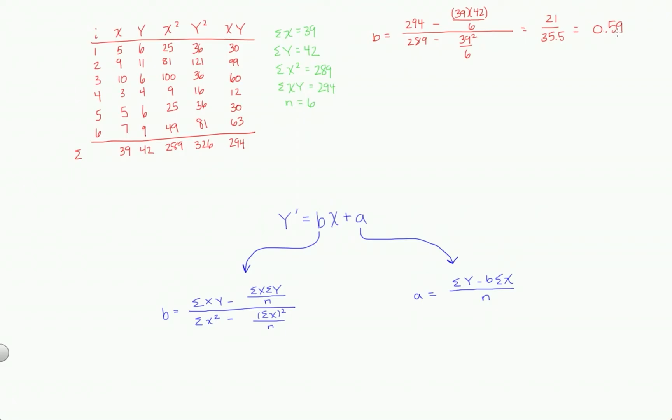So our slope is 0.59. This is a positive slope. It's kind of small, but what does it represent? For each additional unit of x, for each additional x, we can expect 0.59 increase in y. Okay. All right. So now that we have b, we can solve for a.